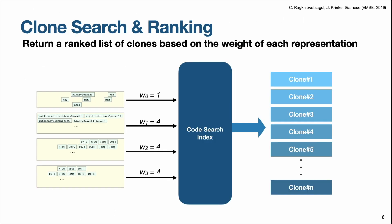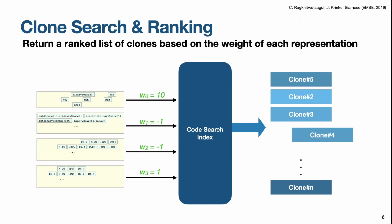Once we have improved the quality of the search queries, we pass the four code snippets — which are four representations of the same source code — to the code search index. With the weighting that we give to each different representation, we can specify the ranking of the clones we would like to get. By changing the weighting like this, we get different orders of the clone results.